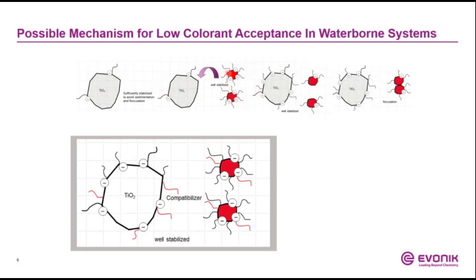When you then add the colorant — in this case maybe an organic pigment — it contains a lot of additive. So on one side we have the titanium dioxide with a high surface area that is free of additive, and on the other side we have a lot of additive on the surface of the organic pigment. The additive then migrates from the surface of the organic pigment particles to the titanium dioxide, just to balance out the lack of additive there, and as a result the organic pigment particles are no longer stabilized and they flocculate.